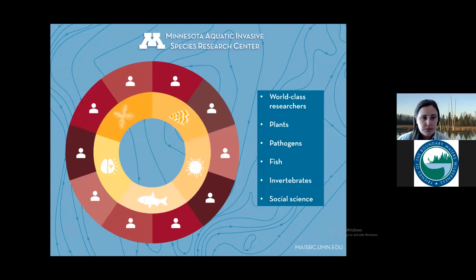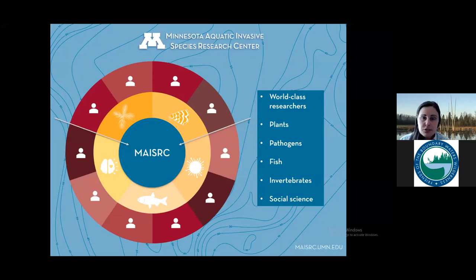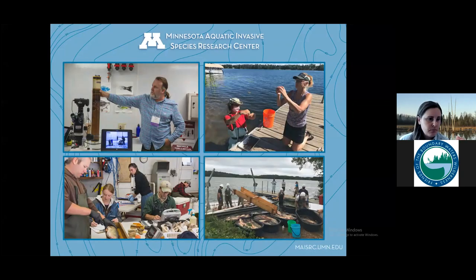We do this by bringing together researchers from all the disciplines necessary to tackle AIS problems. In addition to supporting invasion biologists, we work with policy, human behavior, engineering, economics, and social science experts. Being housed at the U of M allows us to bring together interdisciplinary teams necessary to get this work done. We currently support 29 research fellows — typically PhD-level scientists — and 19 master's or PhD students. We also have multiple advisory teams of professional water managers and community leaders to help guide our research priorities and implementation.